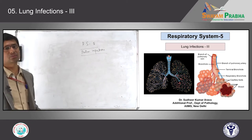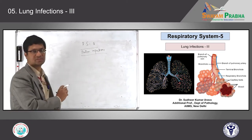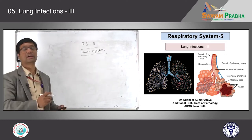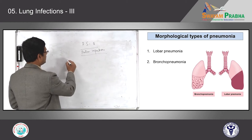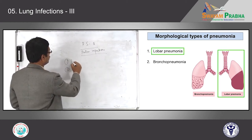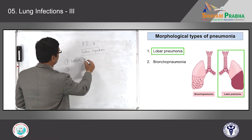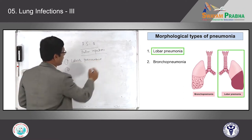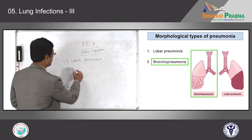In this class we will be talking mainly about the pathological aspects of pneumonia. How can you categorize pneumonia pathologically? Pneumonia is broadly categorized as lobar pneumonia and bronchopneumonia.